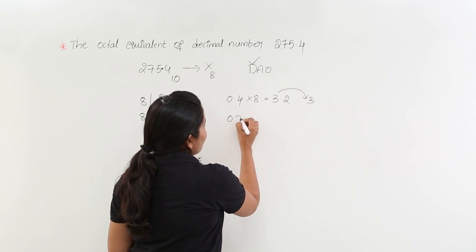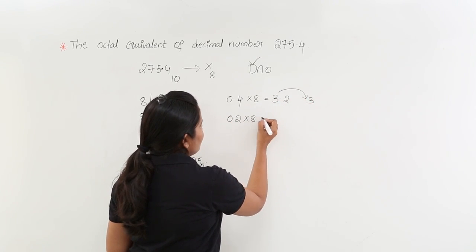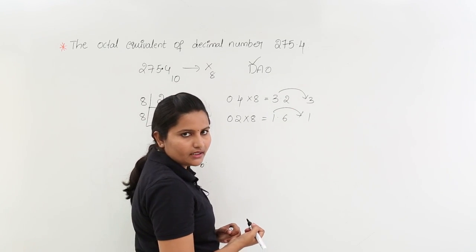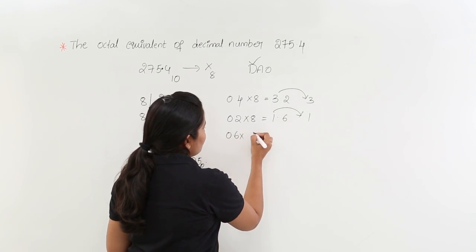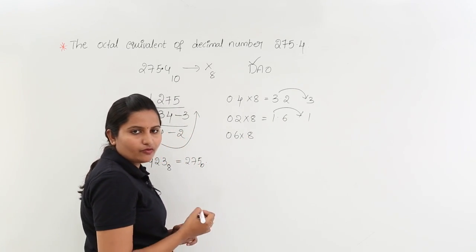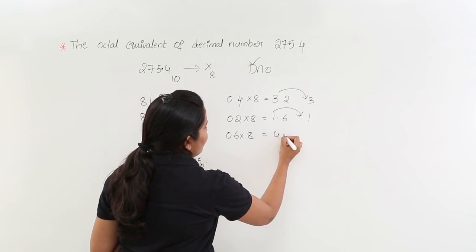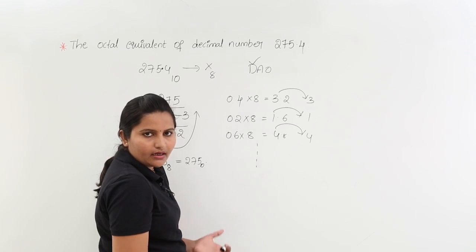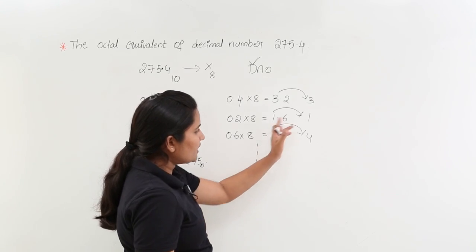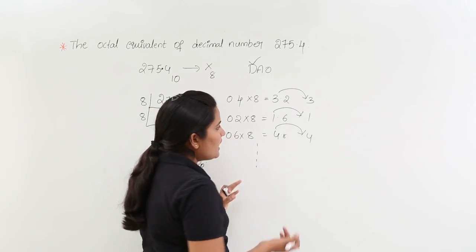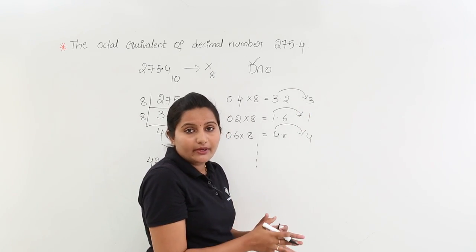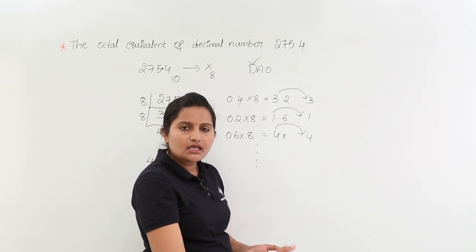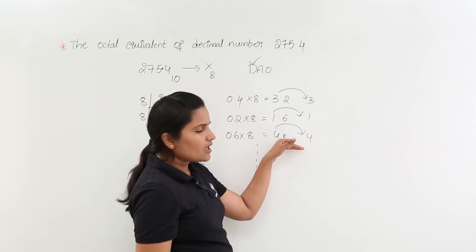The remaining is 0.2. Then 0.2 times 8 equals 1.6, so we take out 1. Again we have 0.6 remaining. Then 0.6 times 8 is 4.8, so we take out 4. This process may continue up to n multiplications. Every time you take out the digits before the decimal point. How many multiplications to perform depends on the options given — if options show only 3 digits after the point, stop there.